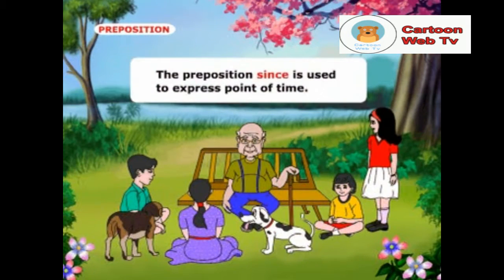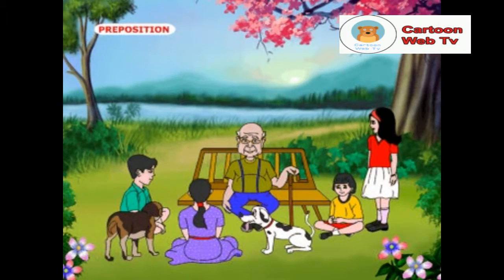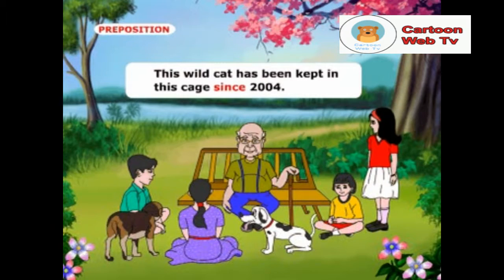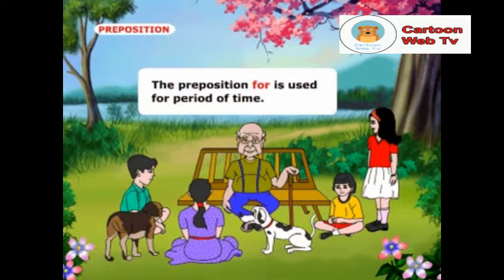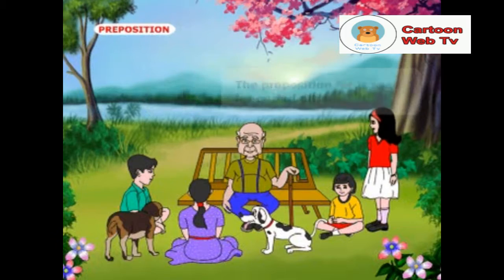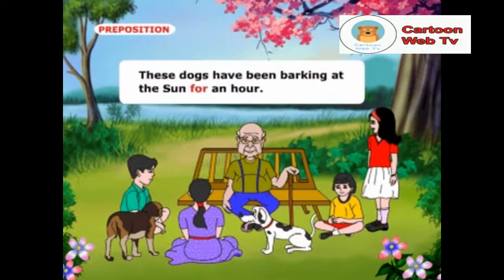The preposition since is used to express a point of time. Example: This wild cat has been kept in this cage since 2004. The preposition for is used for a period of time. Example: These dogs have been barking at the sun for an hour.